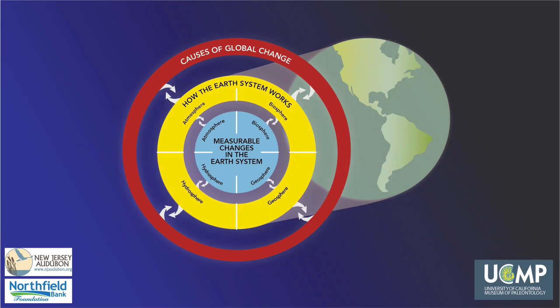The Earth system consists of four major parts: the atmosphere or air, hydrosphere or water, geosphere or land, and biosphere or life. We'll start our discussion of how Earth's system works by exploring the four spheres.